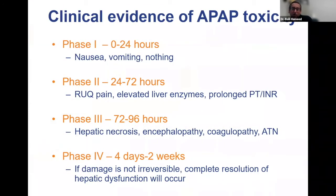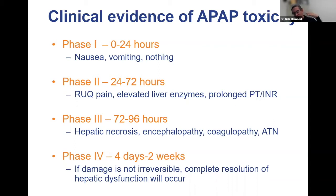In the U.S., we think about different phases of acetaminophen toxicity. Within the first 24 hours, patients have nausea and vomiting, or may be perfectly fine. In the second phase, 24 to 72 hours, patients can have right upper quadrant pain, elevation of AST and ALT, and worsening coagulopathy with prolongation of INR. Phase three, 72 to 96 hours: you have hepatic necrosis, patients develop hepatic encephalopathy, worsening coagulopathy, and kidney injury with acute tubular necrosis.